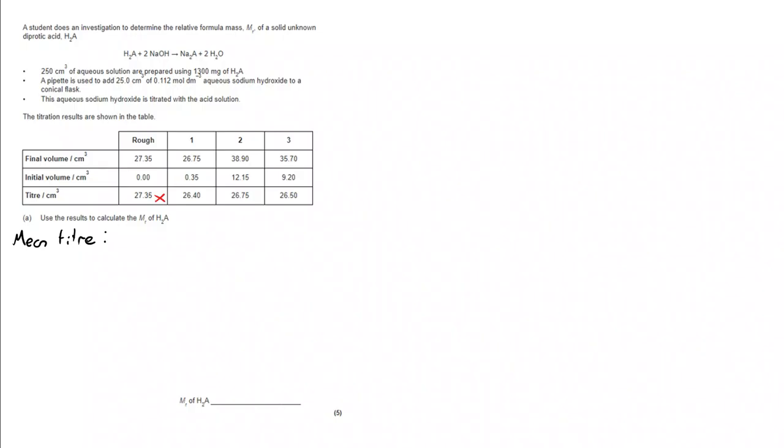But we're also going to disregard experiment number two. 26.75 is too high. It's not concordant with the other two. Whereas 26.40, 26.50 are within 0.10 cm cubed of each other. Therefore, they are concordant.